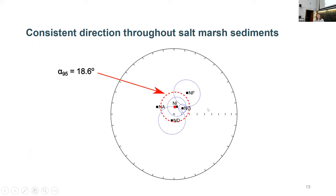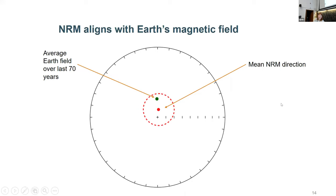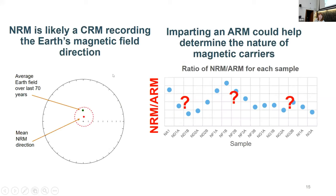We also find a reasonably consistent direction throughout all our samples. This is our site-level analysis - we only got one sample that wasn't altered, so I'm afraid there's no confidence limit, but we can see we have a kind of average direction. If we overlay this with the average direction of the Earth's field over the last 70 years, we can see that the mean NRM direction aligns with it or is close to it - which is pretty good. This shows we think our NRM is a CRM recorded by greigite and that it's reliably recording the Earth's magnetic field direction, which is what we hoped and expected to find.